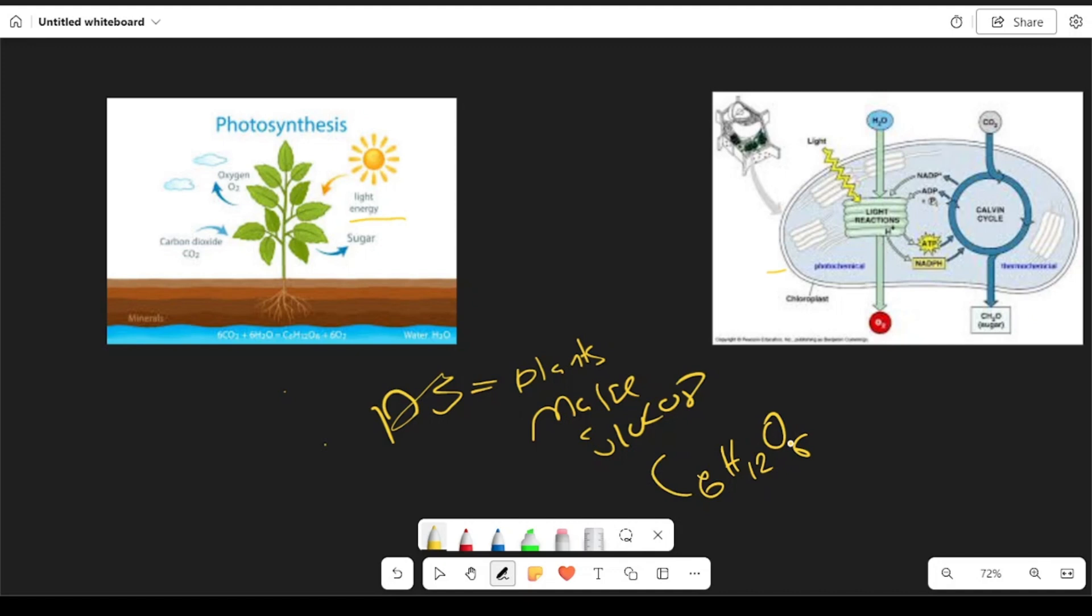They use carbon dioxide which we breathe out, and water which they get from the soil and other minerals. Let's see how exactly everything happens. Light energy plus CO2 (carbon dioxide) plus H2O gives a couple things.